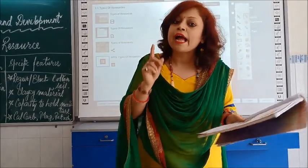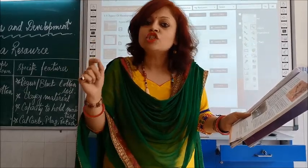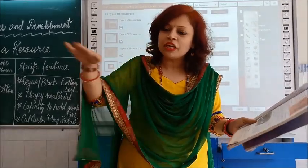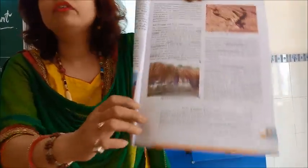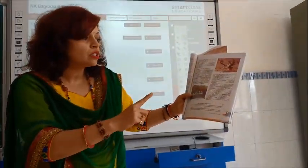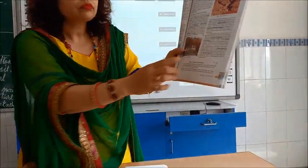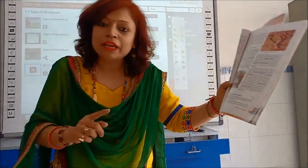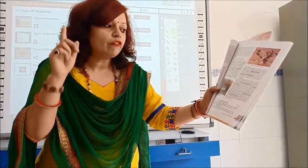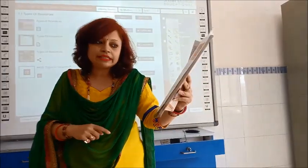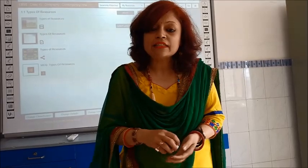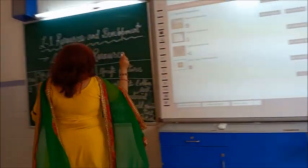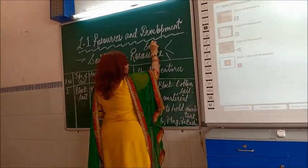Please take your book and mark the main causes behind soil erosion on page number 11. The four reasons are: first, deforestation; second, overgrazing; third, construction; and fourth, mining. There are also three key terms related to soil erosion: gullies, bad land, and ravines.